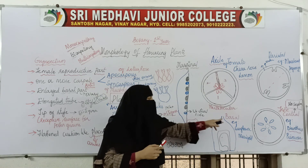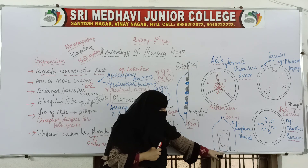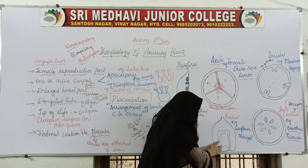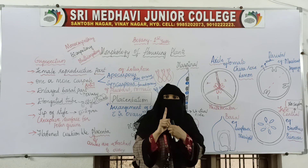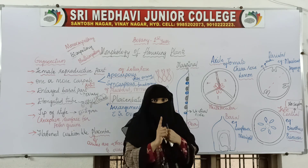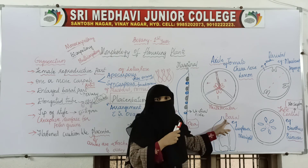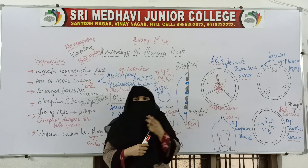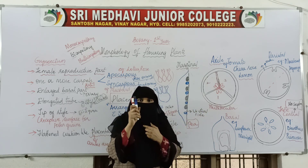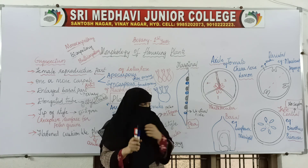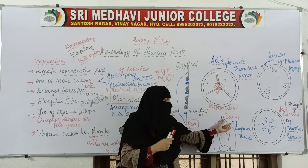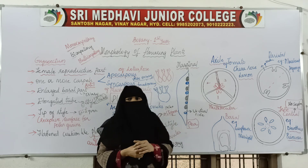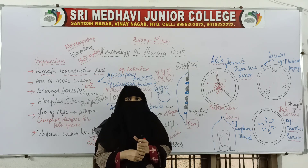The last type is basal placentation. Here, at the base of the ovary, only one single ovule will be present. This type of placentation is called basal placentation, which we see in sunflower and marigold.